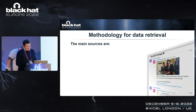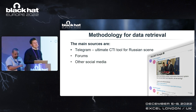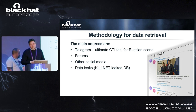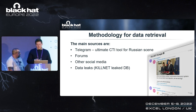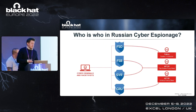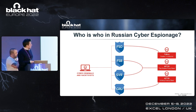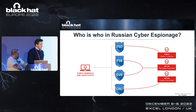There is no intelligence without good data. Our minor resources are Telegram — the ultimate CTI tool for the Russian scene — various forums, other social media like VKontakte or Twitter, data leaks, some information from leaked databases by KillNet, third-party CTI reports from Mandiant, SentinelOne, and Microsoft. In the middle you can see state actors: FSB, SVR, GRU — all attributed in the past. For example, GRU is managing APT group 28.